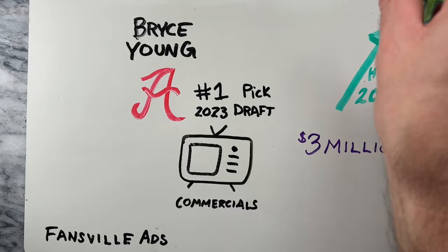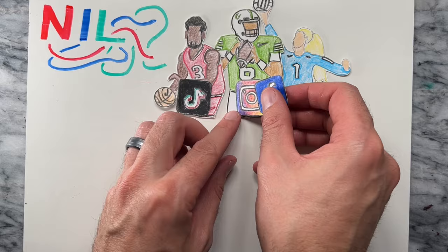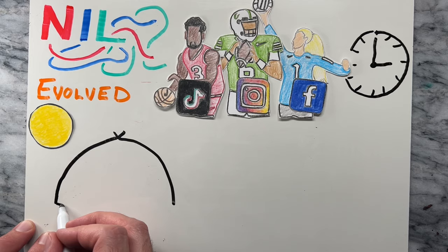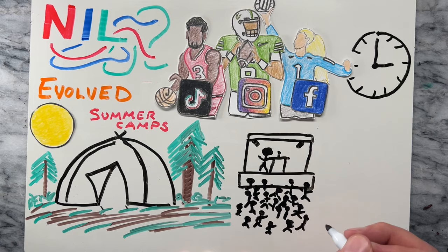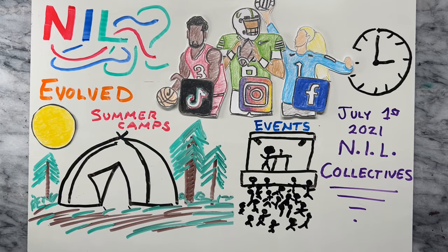NIL deals have evolved since 2021. Initially, most NIL deals were athletes promoting brands on their social media accounts. As time passed and people became more familiar with NIL, the types of ways athletes could earn NIL compensation evolved. For example, athletes started hosting summer camps and making appearances at events. Shortly after July 1, 2021, NIL collectives started popping up at schools.